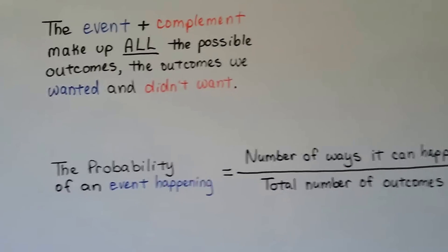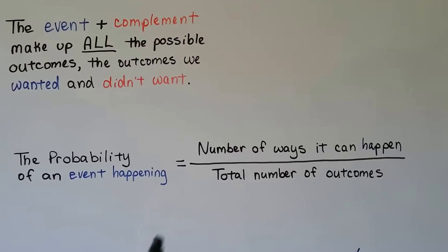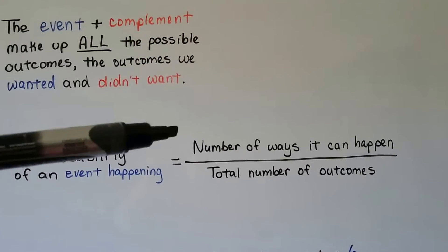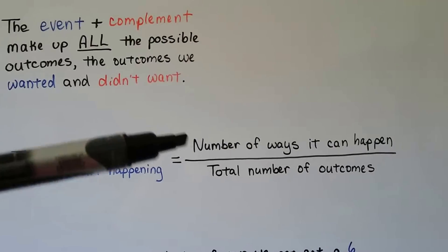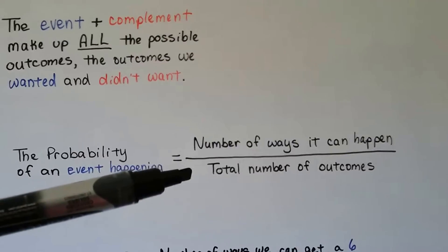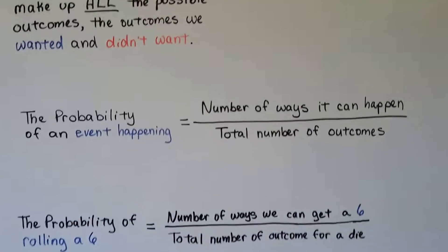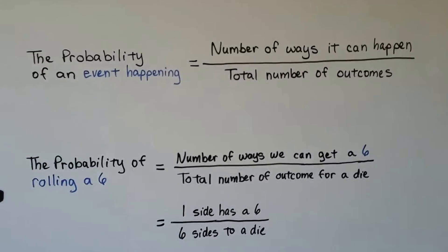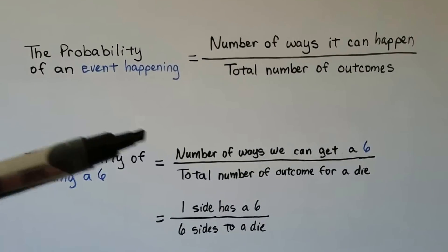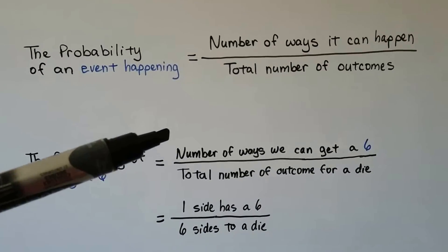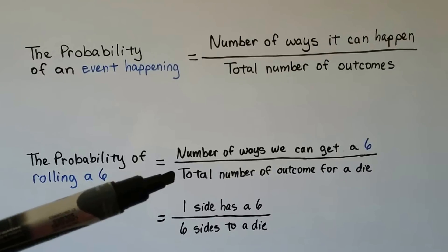The probability of an event happening is equal to the number of ways it can happen divided by the total number of outcomes. So for example, the probability of rolling a six would be the number of ways we can get a six divided by the total number of outcomes for a die.